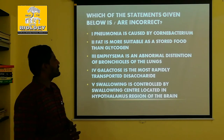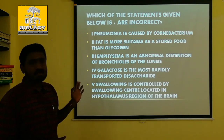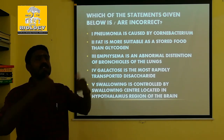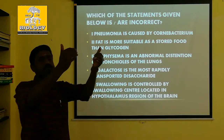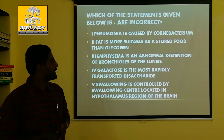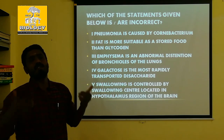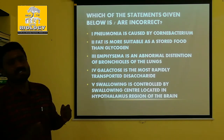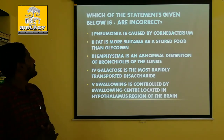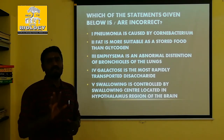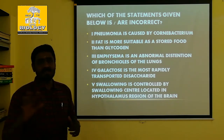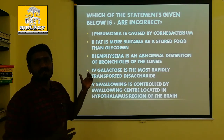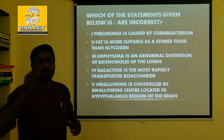Emphysema is an abnormal distension of the bronchioles of the lungs — this is true. Bronchioles are at the third stage of the airway. Bronchi is at the second stage. The distension — that is the expansion — is disturbed. So emphysema involves the bronchioles at the third stage. This statement is true.